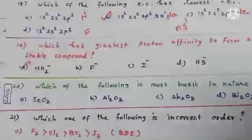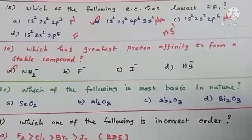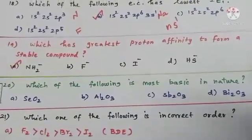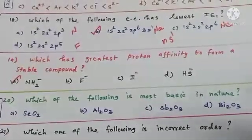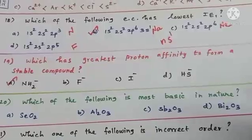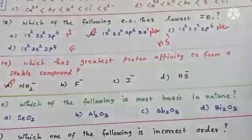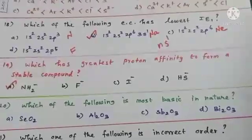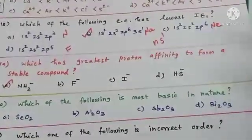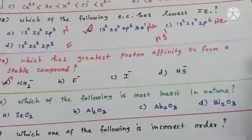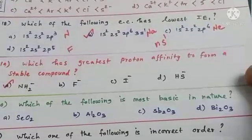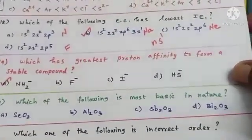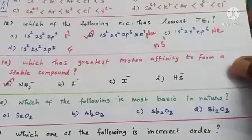Question 20: which of the following is most basic in nature? You are given selenium oxide, aluminium oxide, antimony trioxide, and bismuth trioxide. When we go across the period, the acidic character of oxides increases from left to right, but when you go down a group the basic character increases. So we look for the oxide from the bottom of the periodic table.